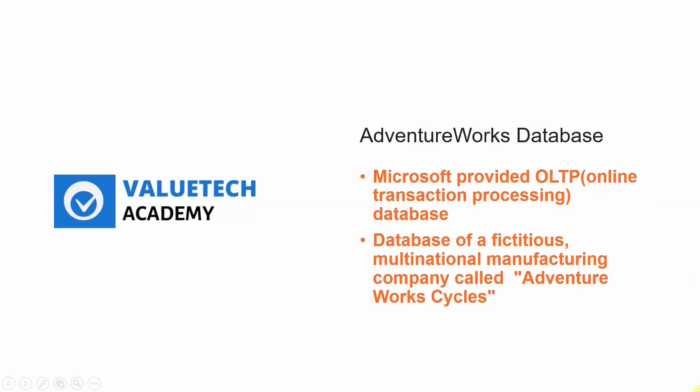To practice SQL queries, you need a real data set that represents the tables, schemas, and database objects similar to your next job or project. The AdventureWorks database is provided by Microsoft and it is an OLTP — that is, an online transaction processing kind of database. This database is for an imaginary multinational manufacturing company called AdventureWorks Cycles. This company has different tables and different schemas to maintain their plant. You can see all this information once you install the AdventureWorks sample database.